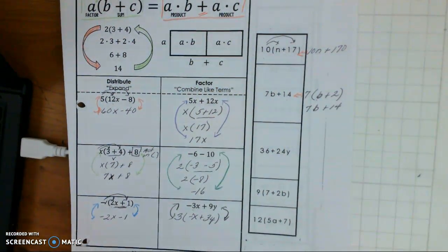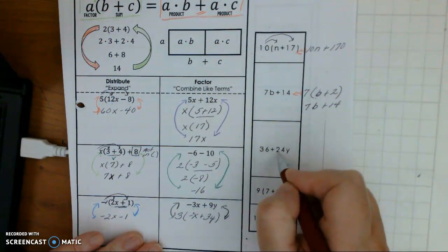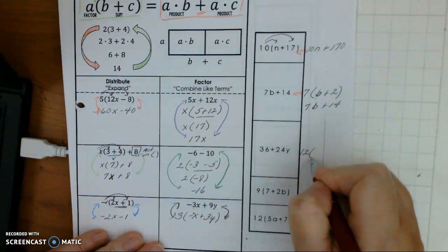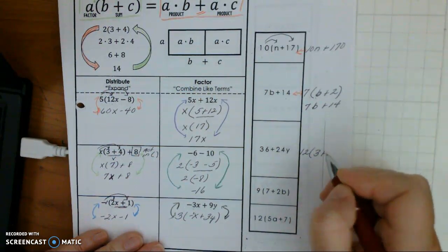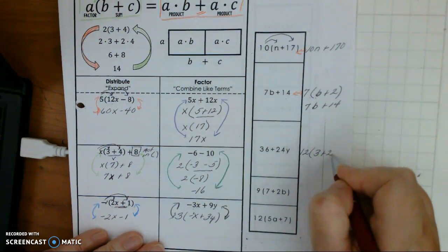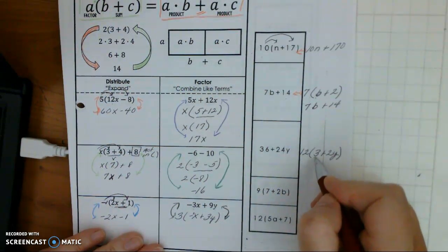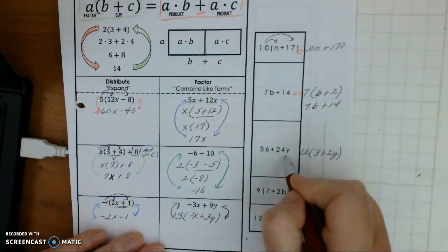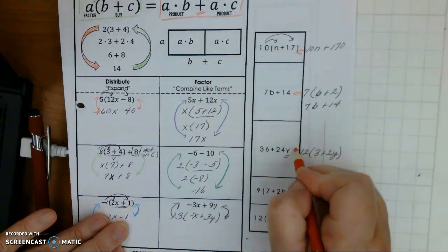Same here. Now, when we do 36 plus 24, I know that each one of these can be divided by 12. So 36 divided by 12 is 3. And 24 divided by 12 is 2. But we have to add the y. So if we were to go back, it would be 12, 3. 12 times 3 is 36. 12 times 2 is 24. And we keep the y. So these are equivalent expressions.